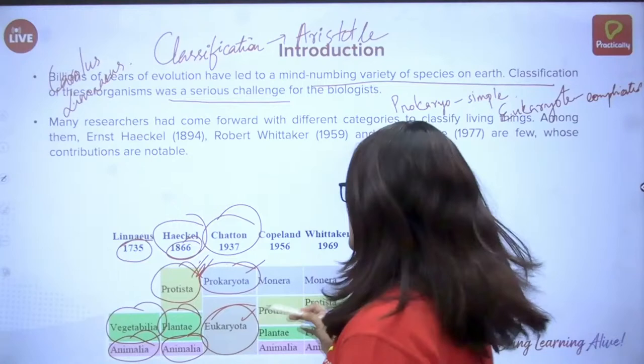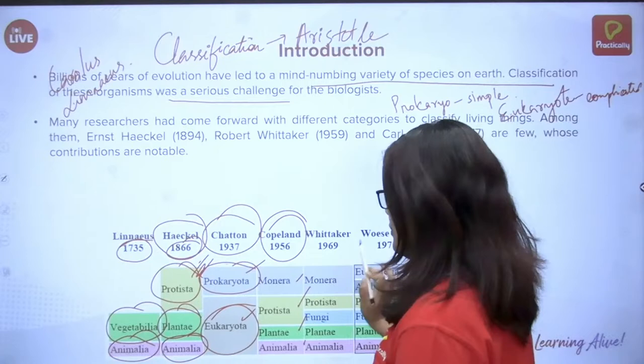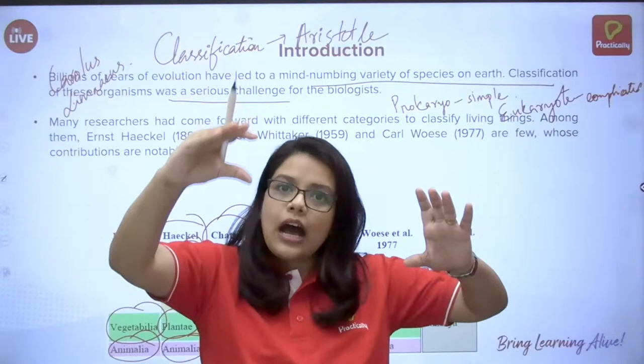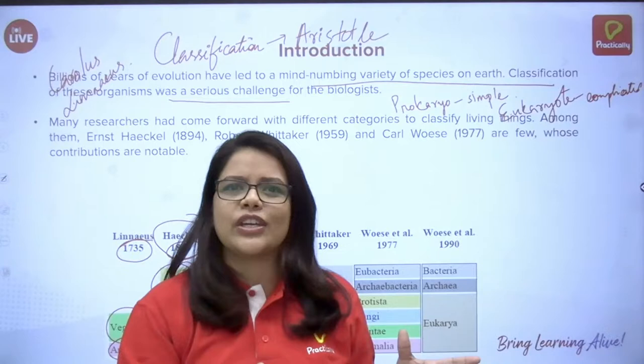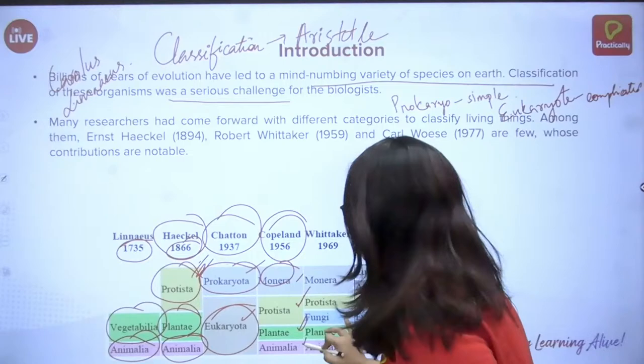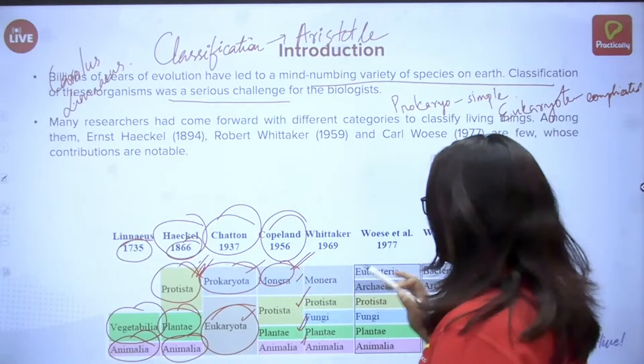Then came Copeland, who divided organisms into Monera, Protista, Plantae, and Metazoa (four kingdoms). He said prokaryotes should go into their own section — Monera. And because eukaryotes are so complicated, you cannot put all of them in just one classification. We are eukaryotes, plants are also eukaryotes — you can't put everyone together. So Monera is basically the prokaryotes.